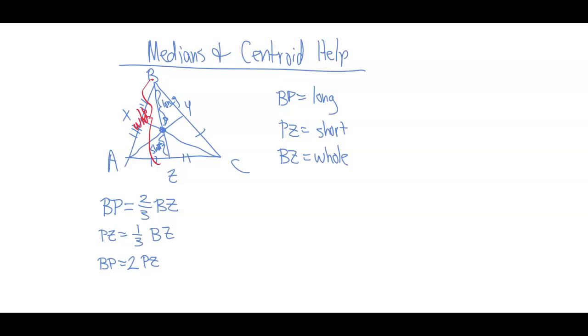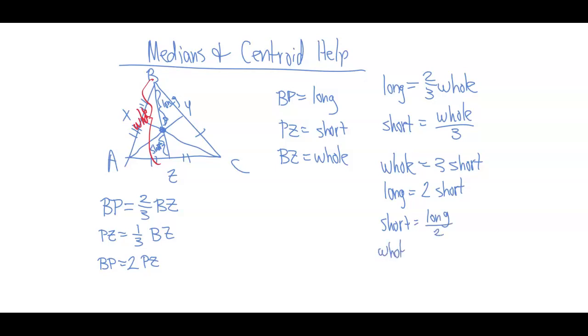We have a couple of these. I'm going to run the list down. The long is equal to two-thirds times the whole. The short is equal to the whole divided by three. The whole is also equal to three times the short. The long is equal to two times the short. The short could be equal to the long divided by two, and the whole could be equal to three-halves times the long. Those are six possibilities.